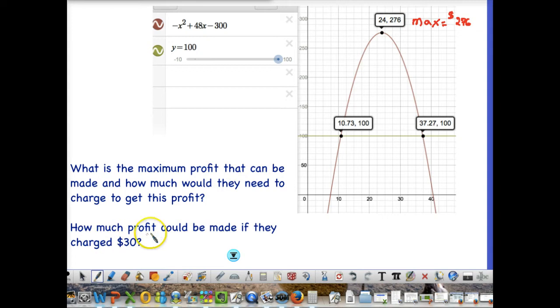And then it says how much profit could be made if they charge $30. So in that situation, I would go over here, and remember that down here is the price charged, right? And so if I find 30, which is right here, and I go up, and I find where it hits my parabola right here, right over here is the profit that could be made, so that looks like about, these go by 10, so 10, 20, 30, 40. So it looks like I could make a profit of $240 if I went ahead and charged $30.